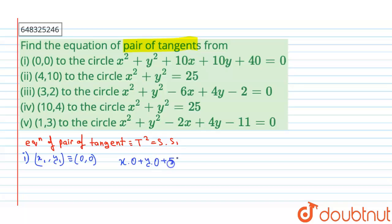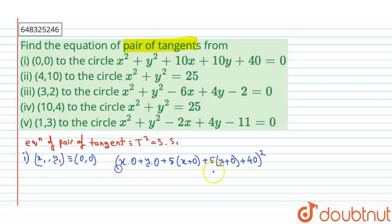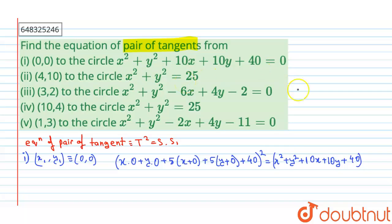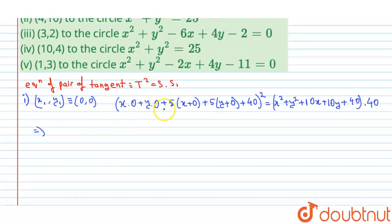Expanding, T² gives (5x + 5y + 40)², and SS₁ means x² + y² + 10x + 10y + 40, multiplied by S₁. Since we substitute (0, 0), only the constant term remains, so S₁ = 40.